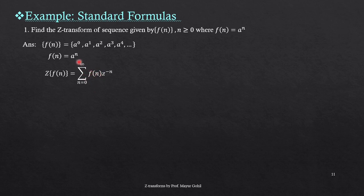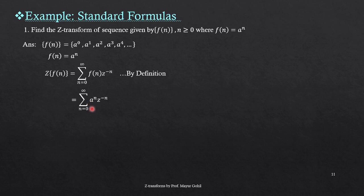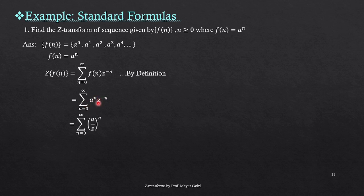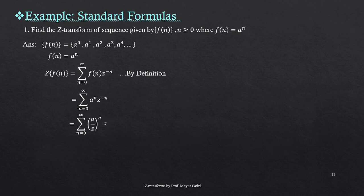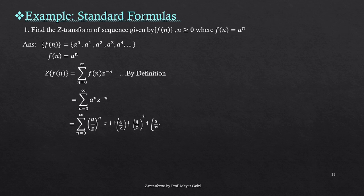We substitute the general term a to the power n into the definition. A sense of mathematical maturity will help you simplify this, and such simplification is possible because of the laws of indices. So you can collect the terms inside the summation and write them as a upon Z, the whole raised to the power n. If you expand this summation you get 1 plus a upon Z plus a upon Z squared plus a upon Z cubed, and so on — this is the pattern that will be followed.